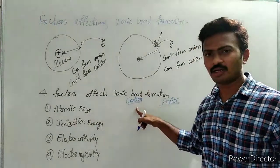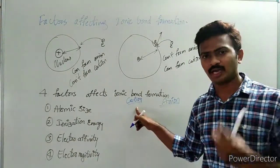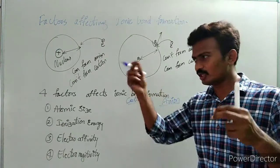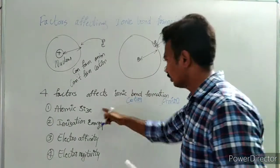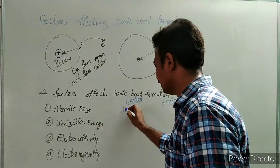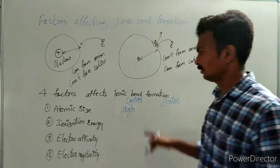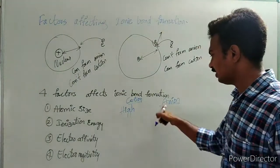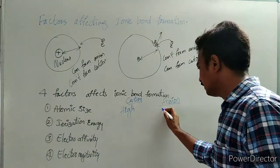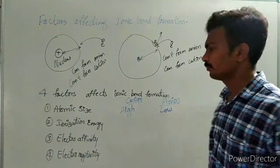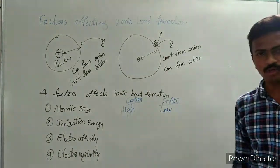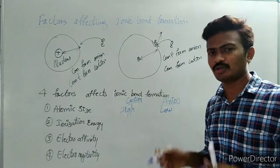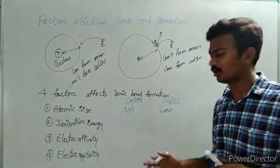Let us write the factors. For cation formation, the atomic size should be very big — then only it can lose the electron readily, so atomic size should be high. For anion formation, the atomic size should be low — atoms should be small so that they can attract the incoming electrons very strongly to form an anion.